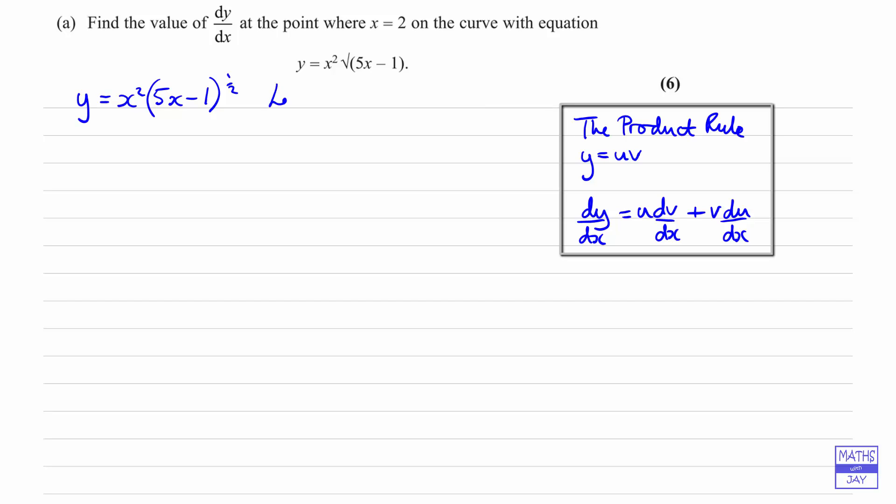We want to let u equal to one of the functions. It doesn't really matter which one, so we might as well take it to be the first one. And we need du by dx. So that will be 2x. And then v is going to be the other function. So that's 5x minus 1 to the power of a half.